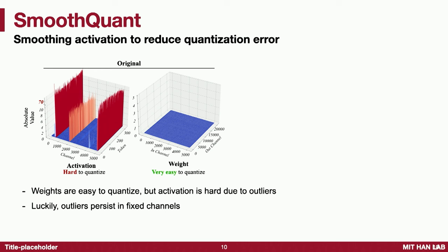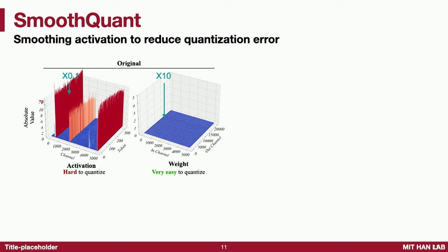We find it's not quite easy. There's a new challenge: there are a lot of outliers in the activations of large language models. Like in channel 500, channel 2000, channel 5000 — they have very big spikes. If we use uniform quantization for these large numbers, all the small values will be dwarfed to zero, and you're not exploiting the quantization buckets very well. The weights, however, are pretty flat and easy to quantize.